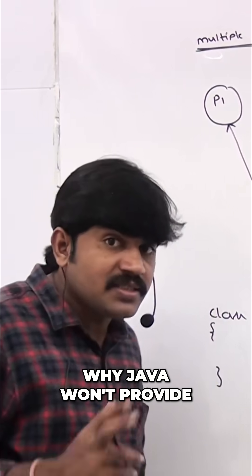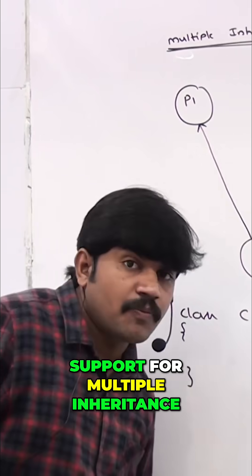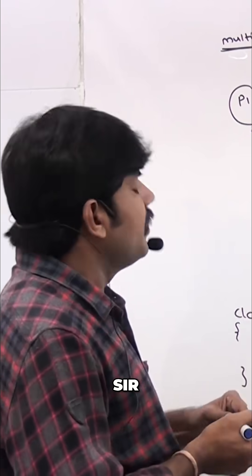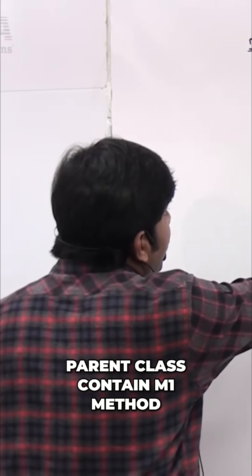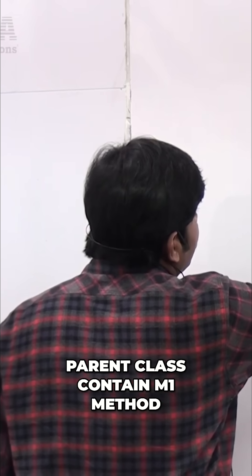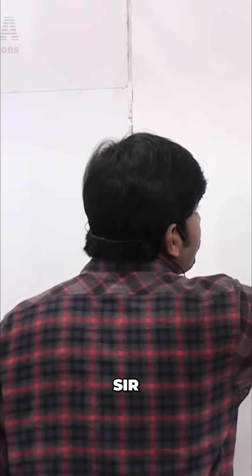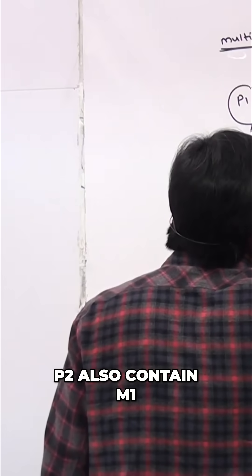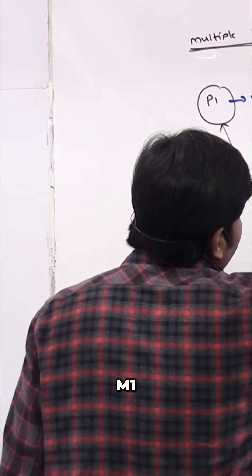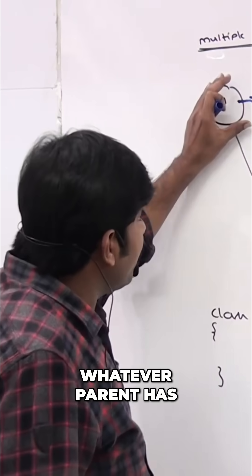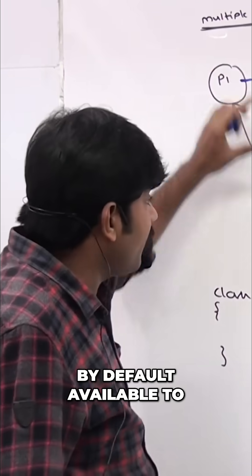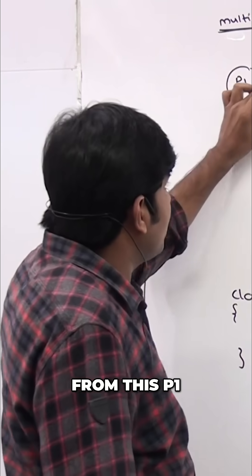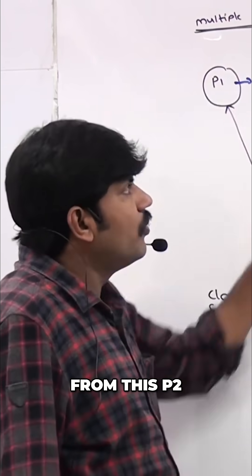What is the reason why Java won't provide support for multiple inheritance? Suppose parent class P1 contains an m1 method, and P2 also contains an m1 method. Whatever the parent has is by default available to the child through the inheritance concept.